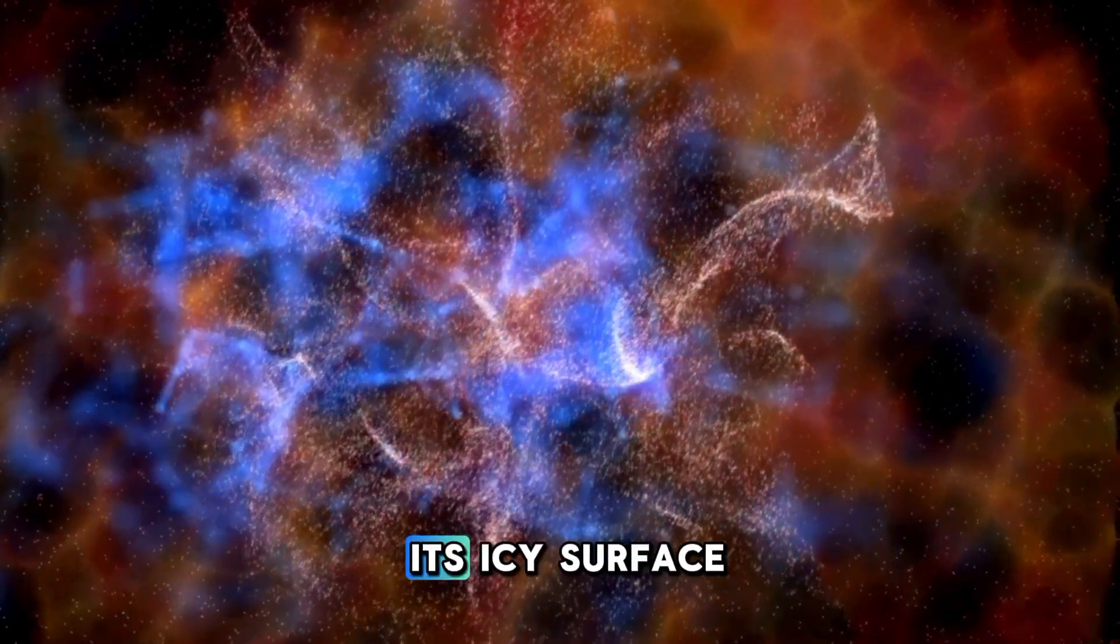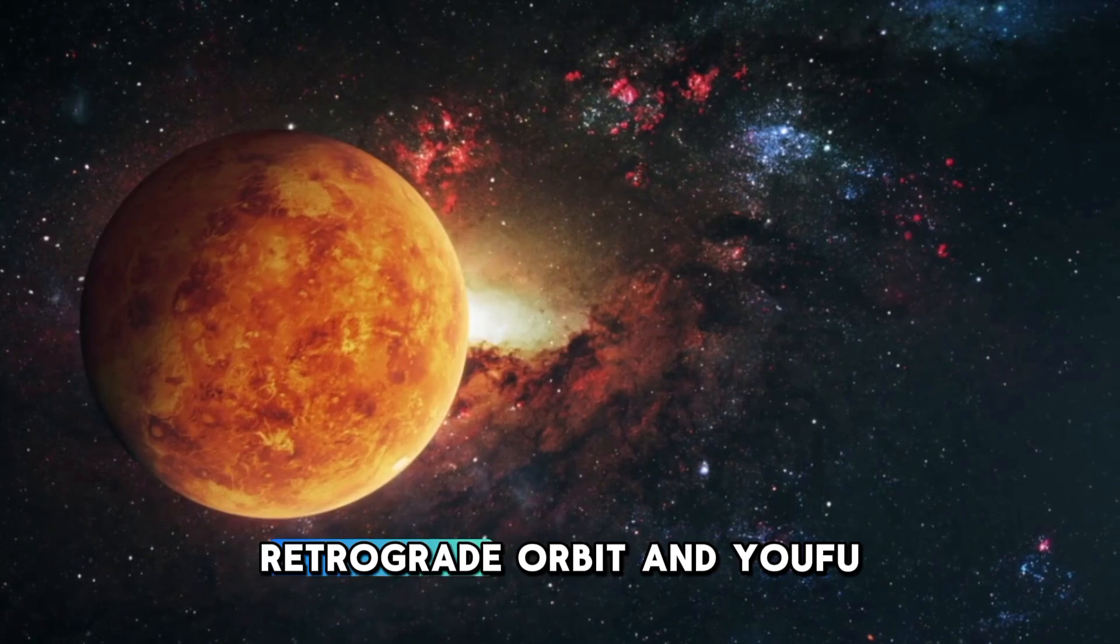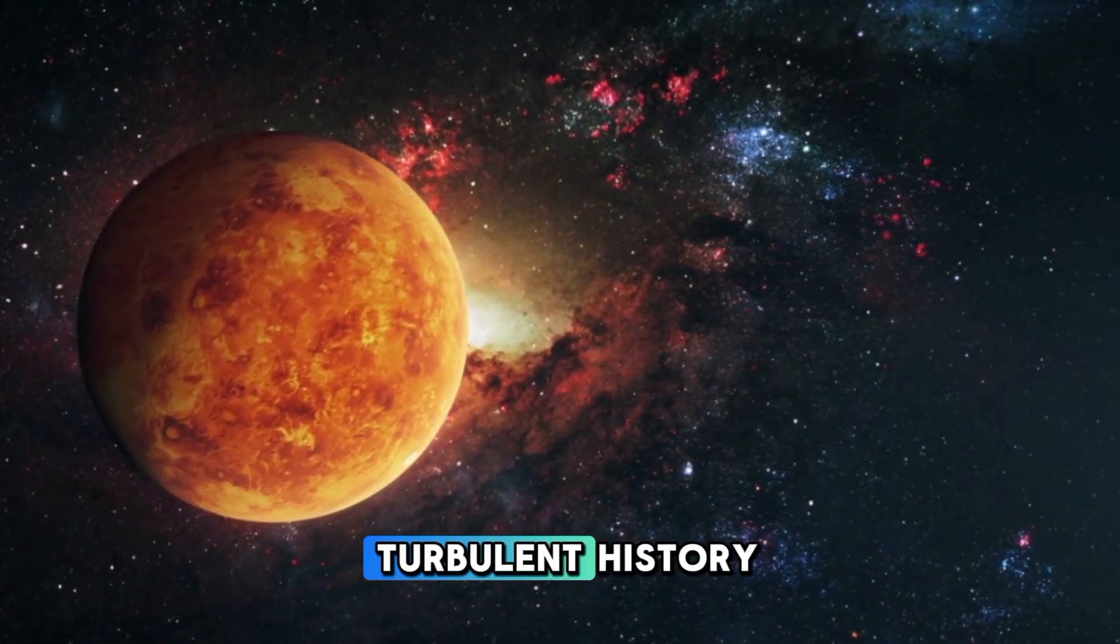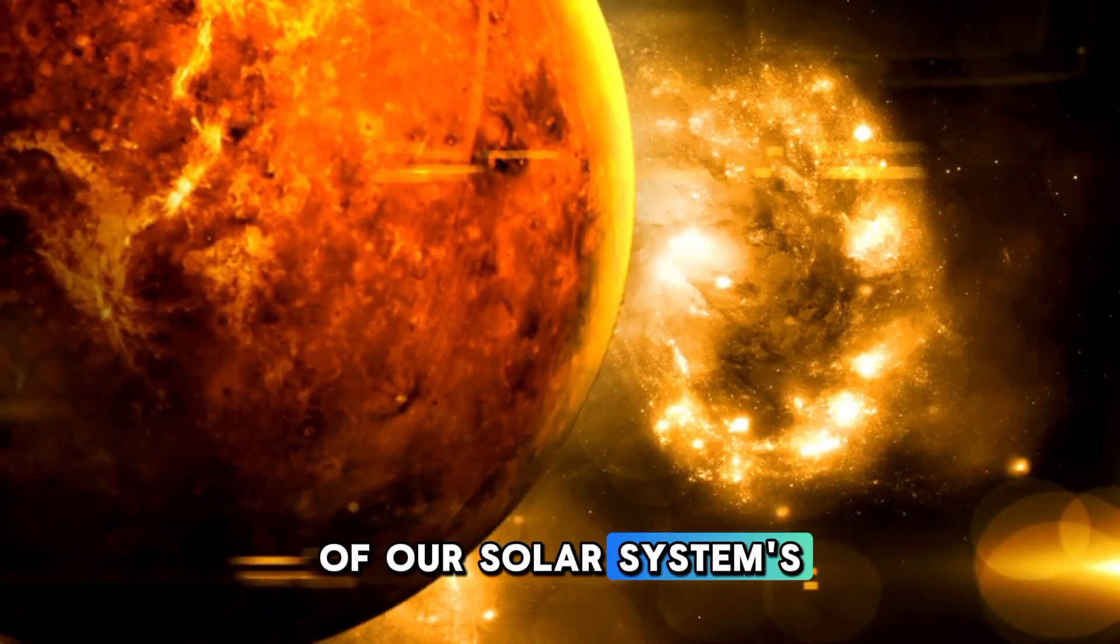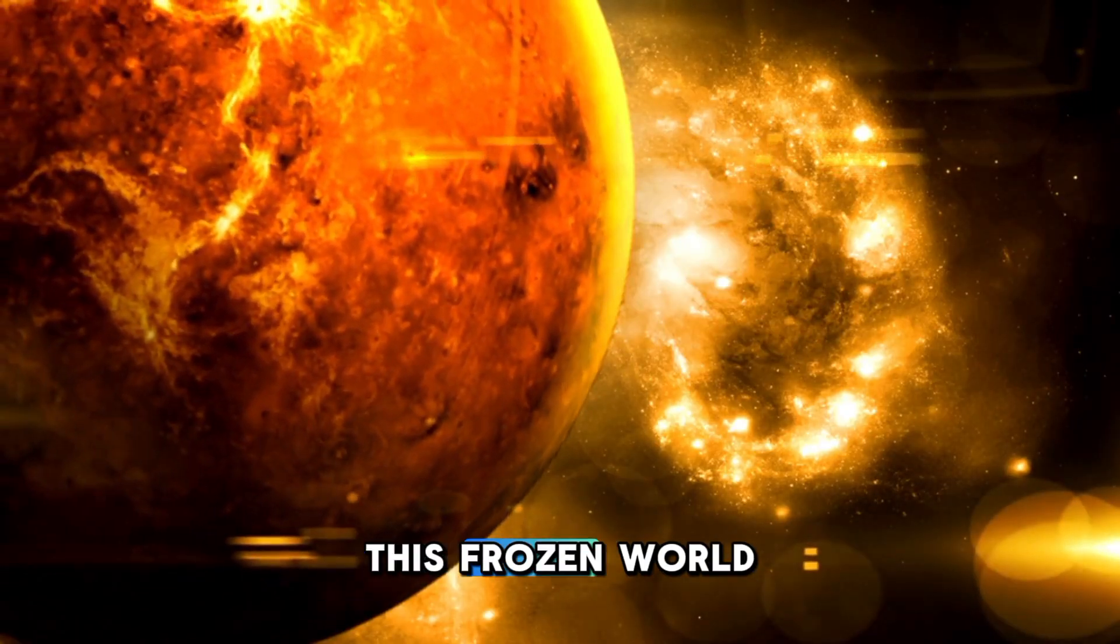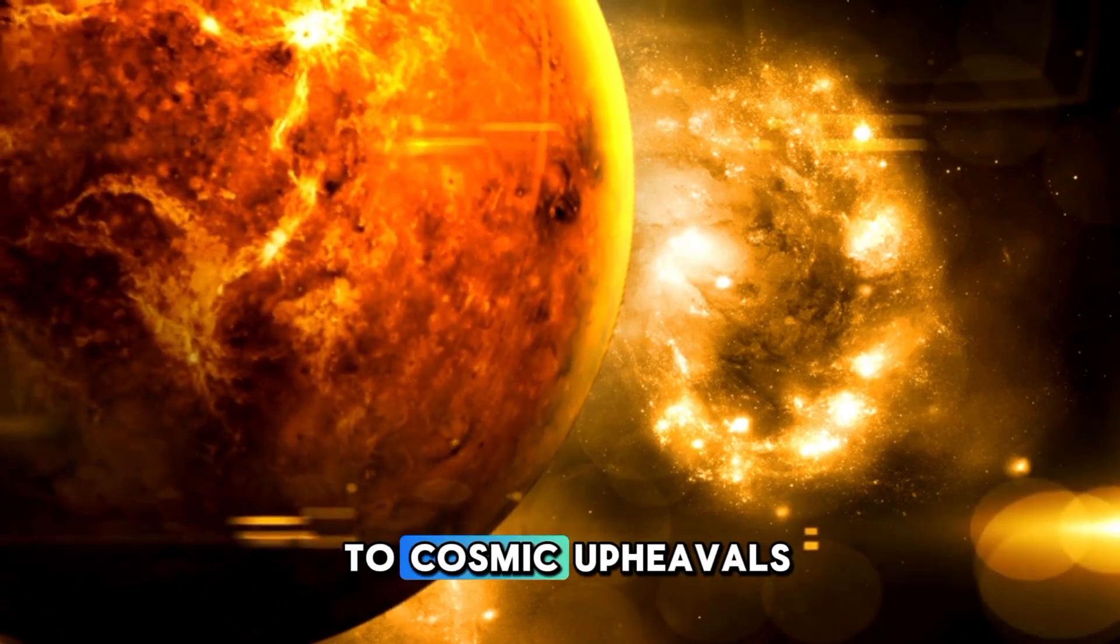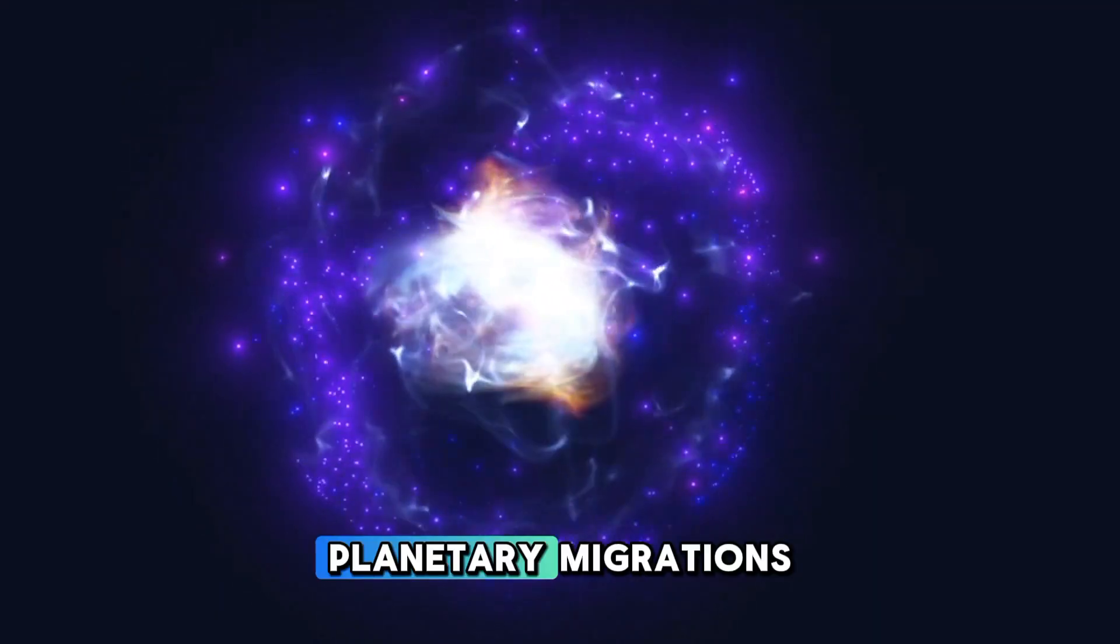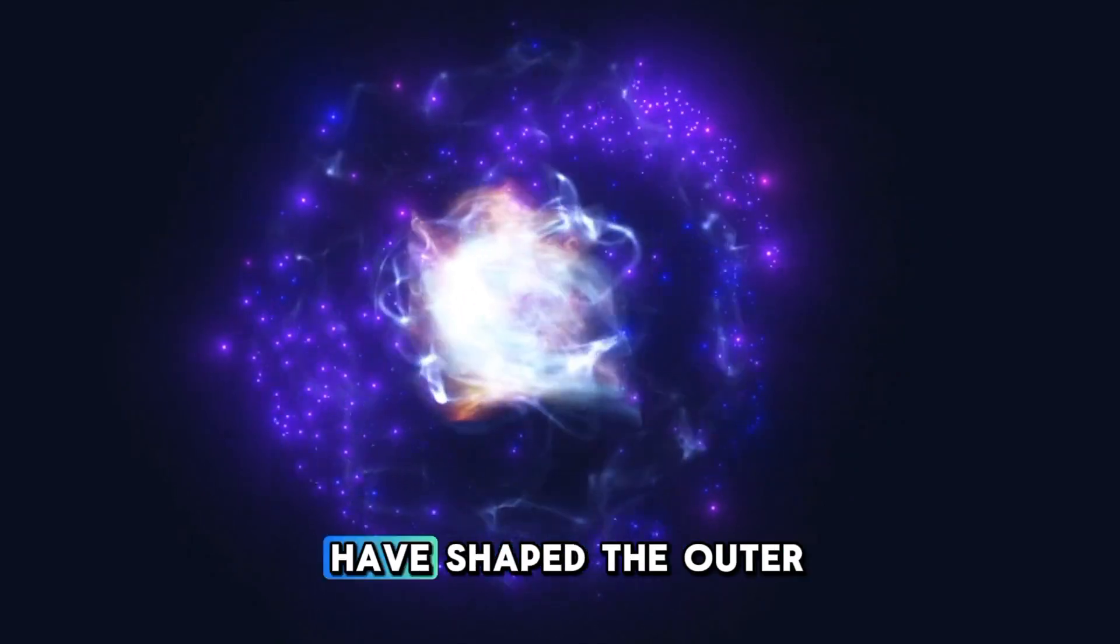Its icy surface, retrograde orbit, and youthful appearance hold clues to the turbulent history of our solar system's formation. This frozen world is a silent witness to cosmic upheavals, planetary migrations, and the forces that have shaped the outer solar system.